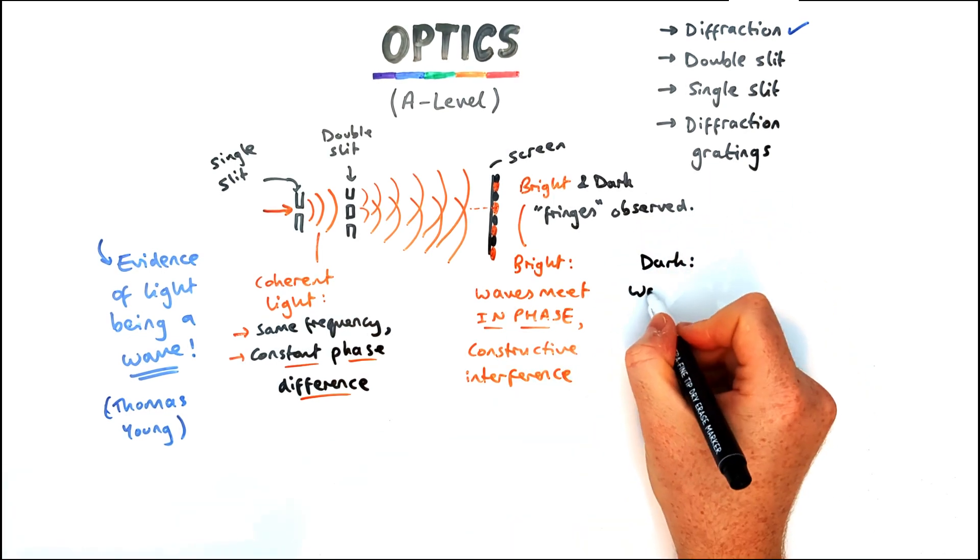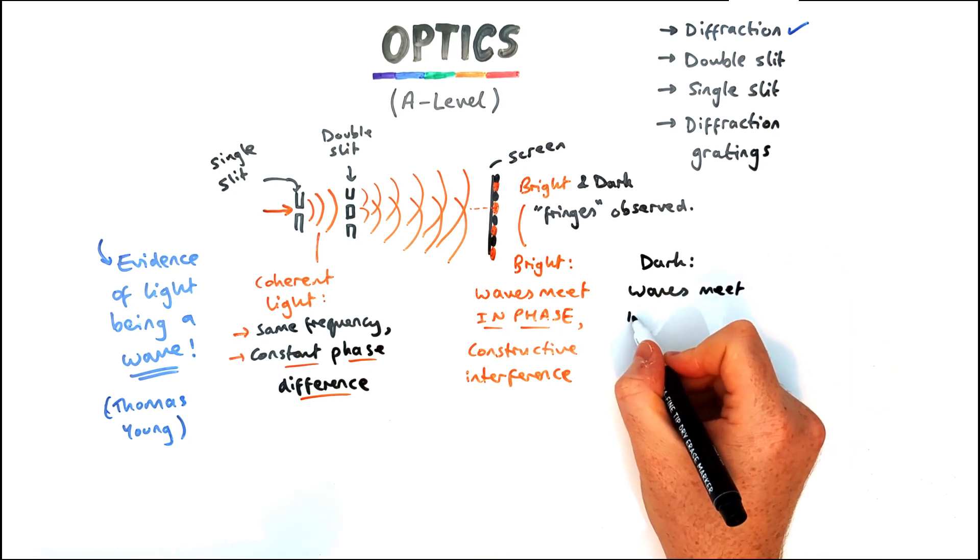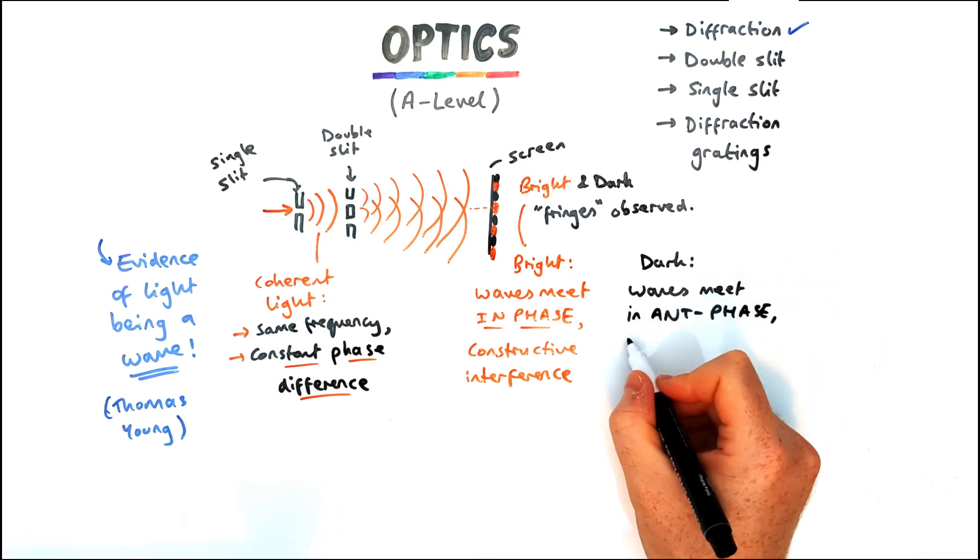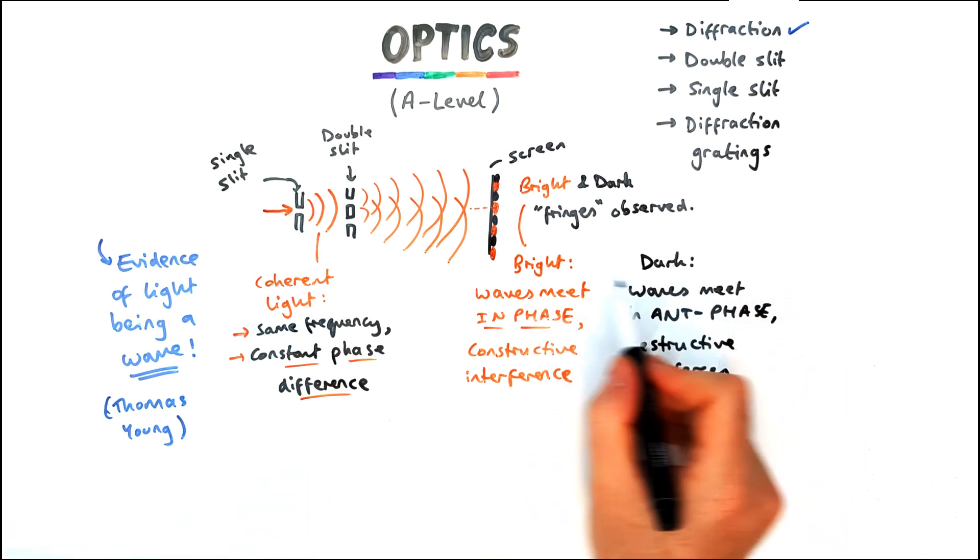The dark spots and the waves meet in anti-phase or 180 degrees or pi out of phase. So this means it's called destructive interference and that means a peak meets a trough which means they cancel out with each other.